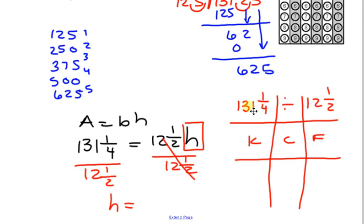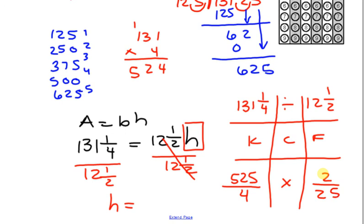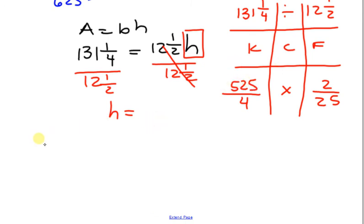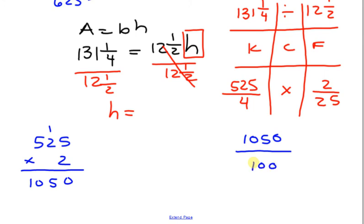Now, how do I make this into an improper fraction? 131 times 4. 4 times 1 is 4. 4 times 3 is 12. 4 times 1 is 4 plus 1. 524, but I've got to add that extra one. 525 over 4 times. 2 times 12 is 24 plus 1 is 25, except I need to flip it. And 2 over 25. Now, let's multiply. What is 525 times 2? 525 times 2. We have 1, 0, 4, 5, and then we have 0. So we're going to have 1050 over, and what's 4 times 25? 100.